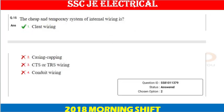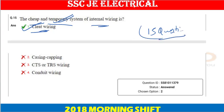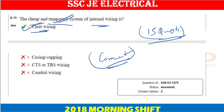This next question is a direct question: the cheap and temporary system of internal wiring is cleat wiring — it is very cheap and temporary, and deteriorates quickly. That completes 15 questions solved in this video. In the next video, we will cover the remaining 15 questions, and after the technical section is done, we will solve the aptitude part. If you have any doubts, ask in the comment section. Join the Telegram group where students are preparing daily with around 50 questions. All the best, see you in the next video!